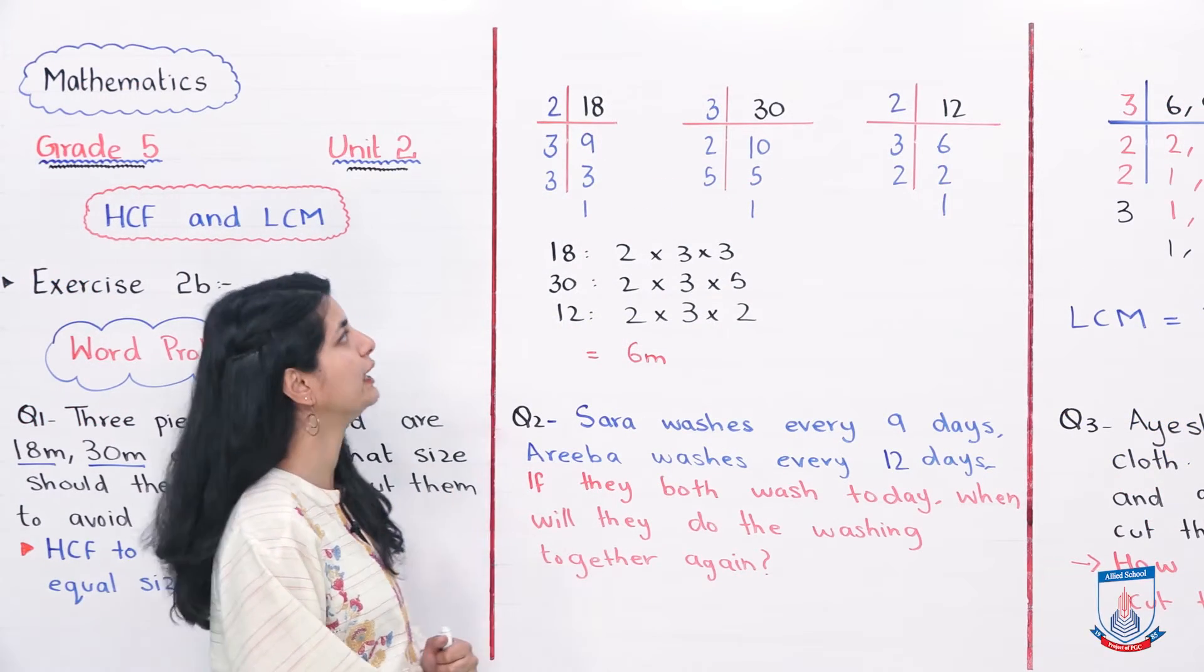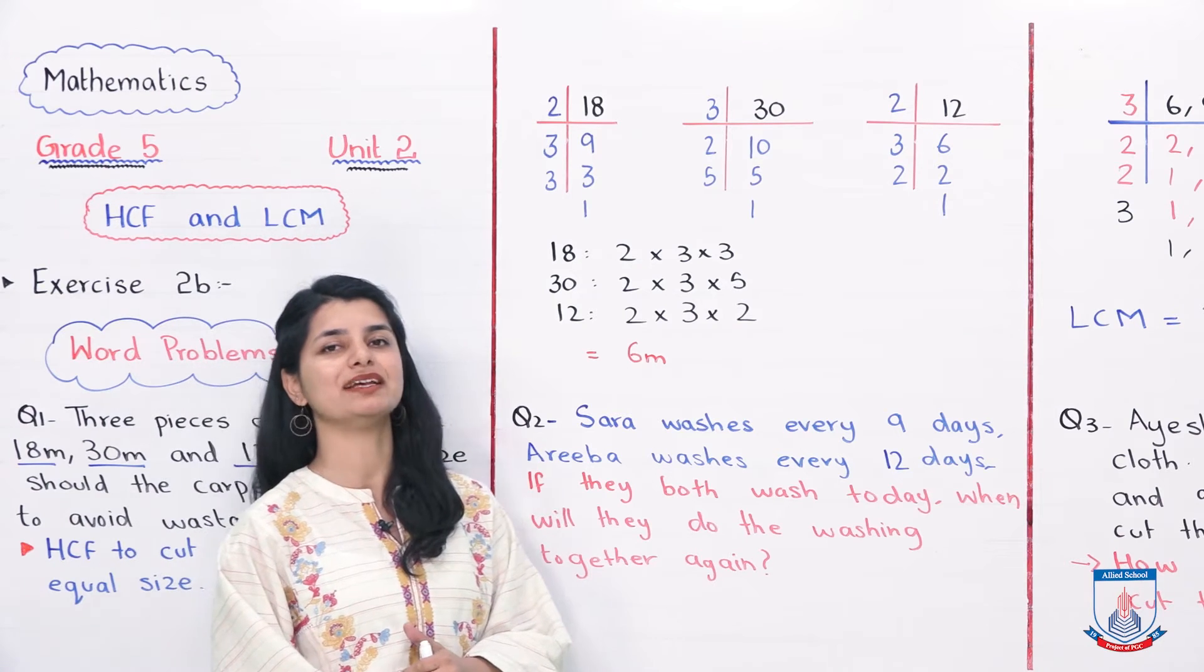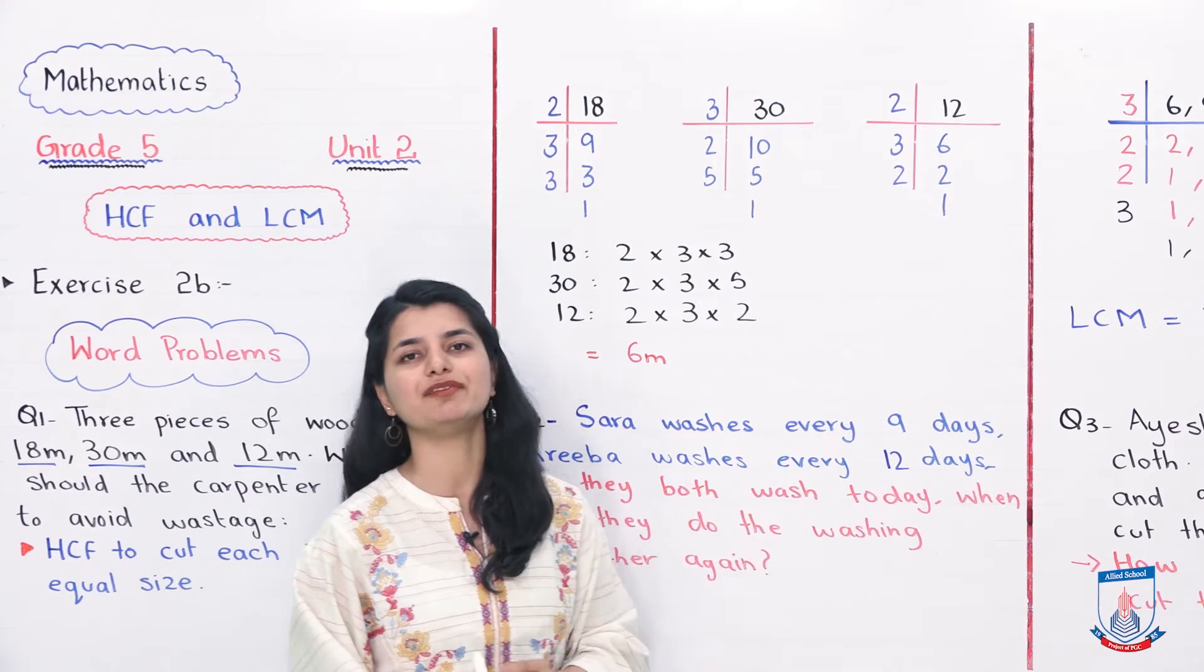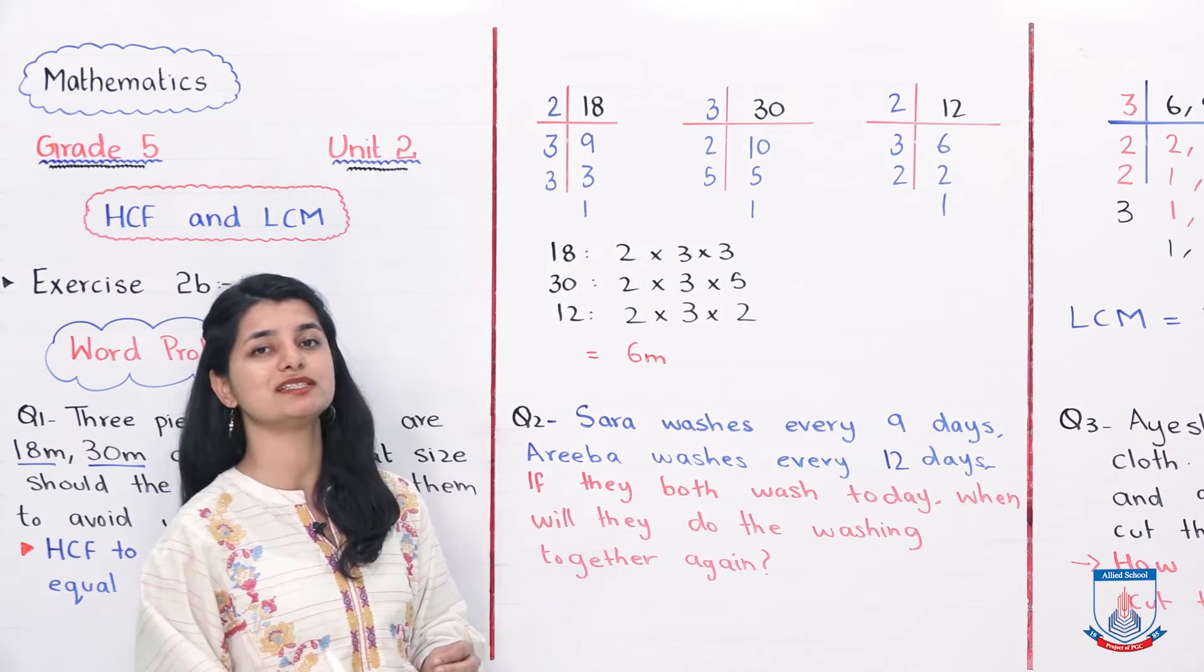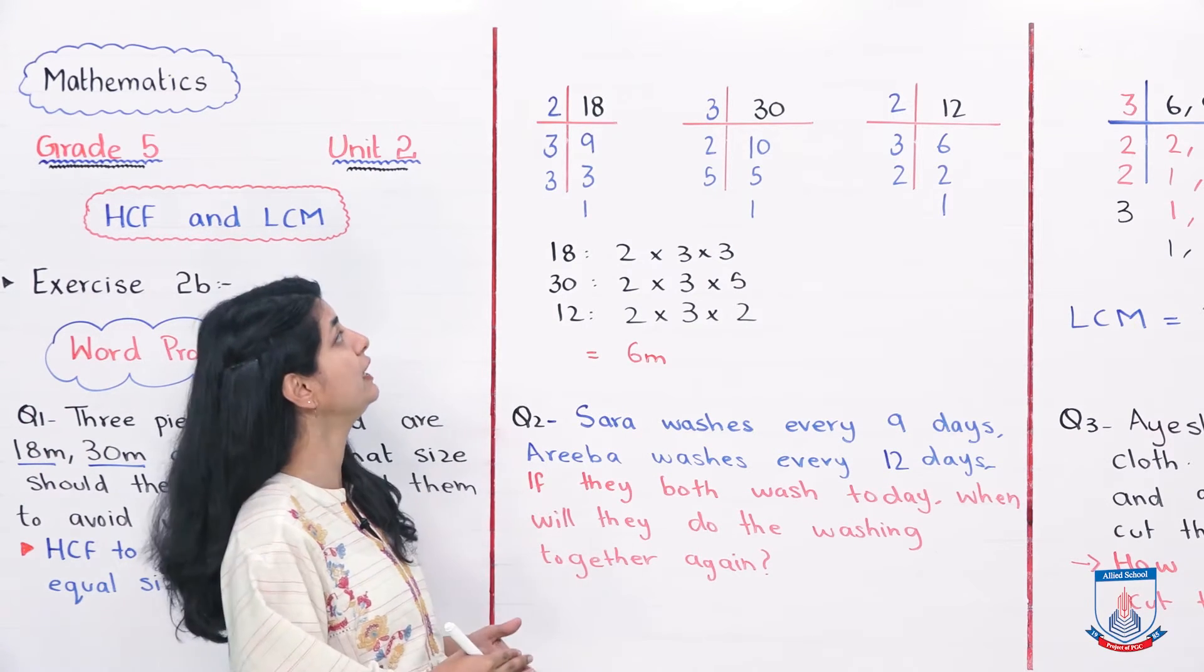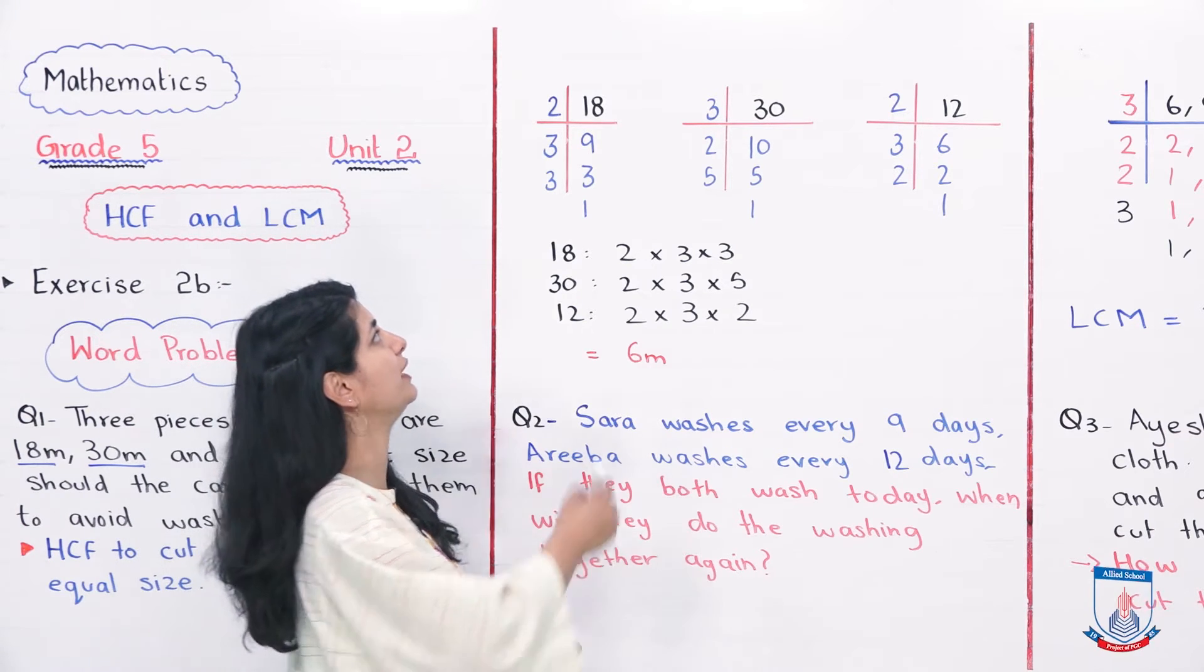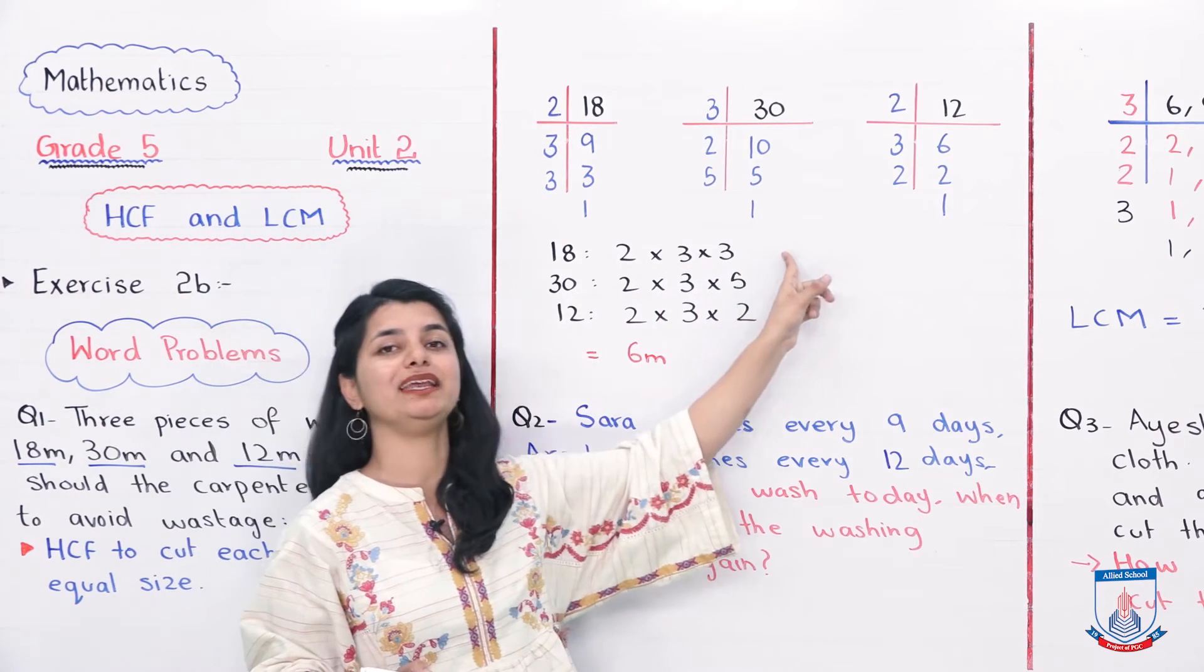For HCF, we use the prime factorization method. First, we will start with 18. For 18, we start with 2. 2 times 9 is 18, 3 times 3 is 9, and 3 times 1 is 3. So what is our prime factorization? 2 × 3 × 3, which we have written for 18.